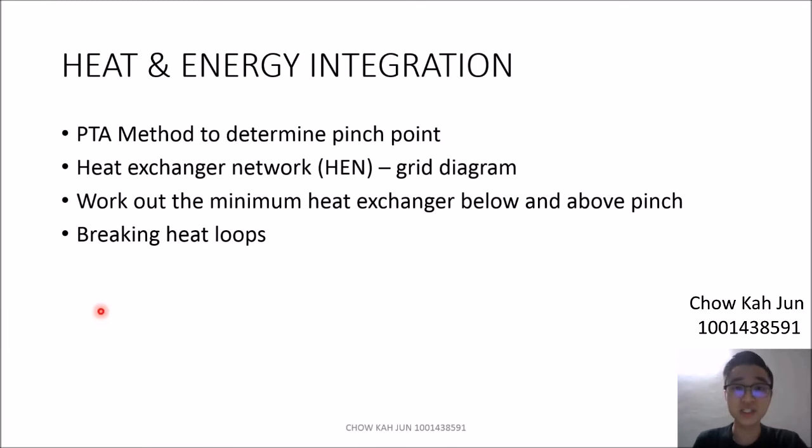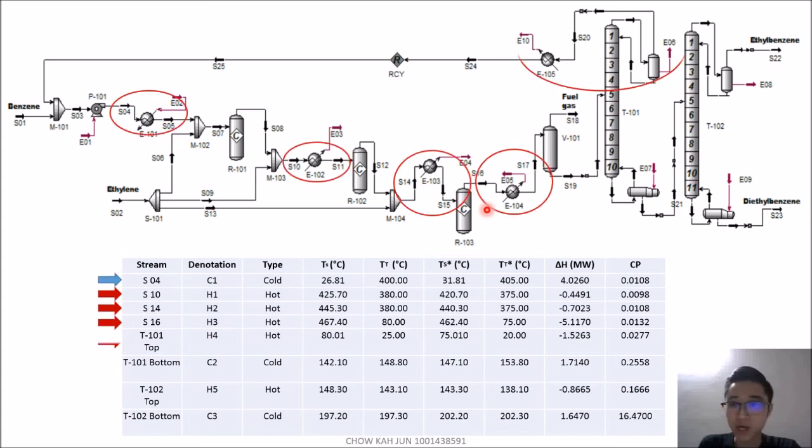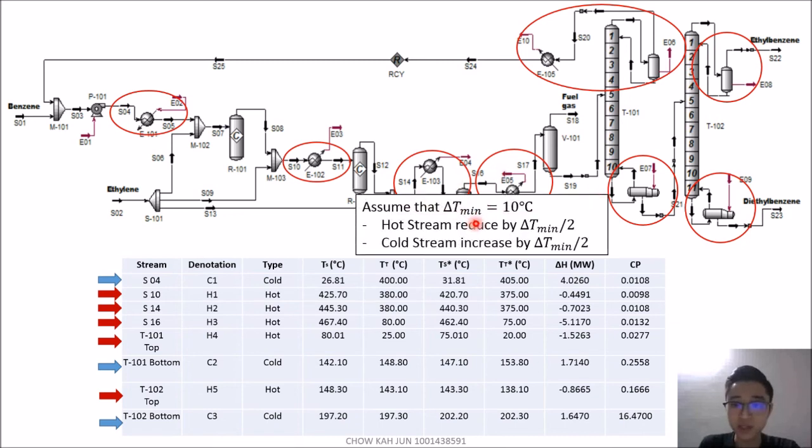Hello. I'm Chow Khajun. I would like to talk about heat and energy integration. First, we'll talk about PTA method, which is the problem table algorithm to determine the pinch point. Then we'll talk about the heat exchanger network grid diagram. From there, we'll work out the minimum number of heat exchangers and how to break the heat loops. This is the PFD of ethyl benzene production. I'll skip to where we identify all the streams.